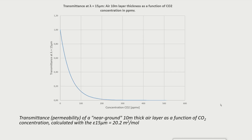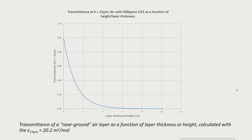To visualize that, I plotted the transmittance at a wavelength of 15 micrometers through a 10-meter thick layer of air as a function of the CO2 concentration. This shows that even at the much-cited pre-industrial 280 ppmv of CO2, the 15 micrometer absorption is at saturation. I also plotted the transmittance of a near-ground air layer with 400 ppmv CO2 as a function of layer thickness. After its way through a few meters of air, the 15 micrometer radiation is completely absorbed, so back radiation is limited to a ground layer of only a few meters.